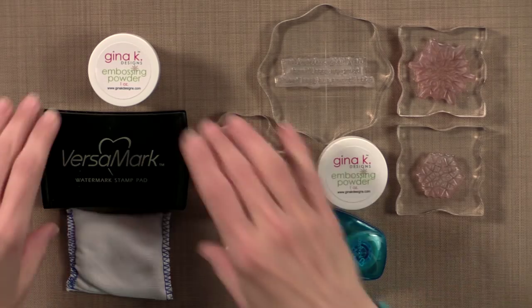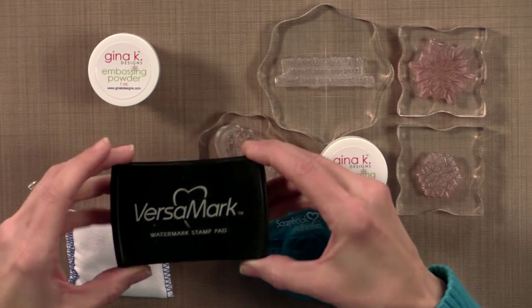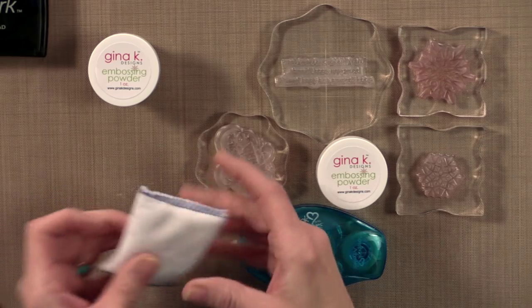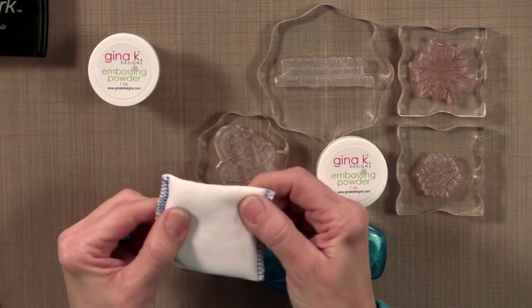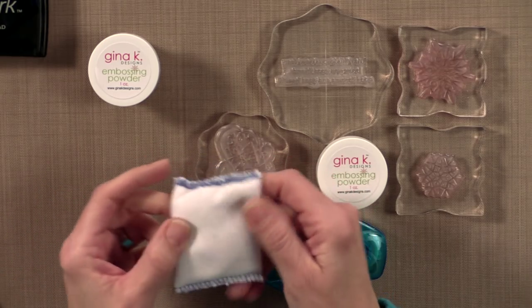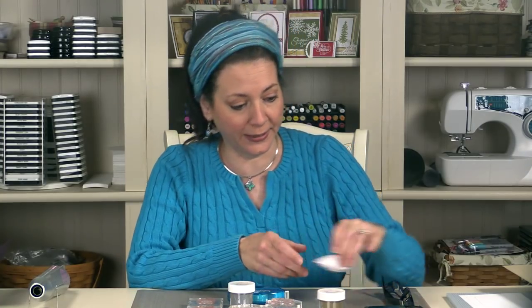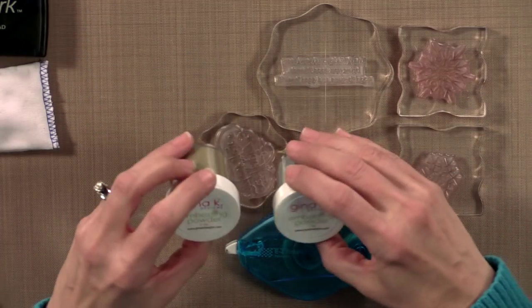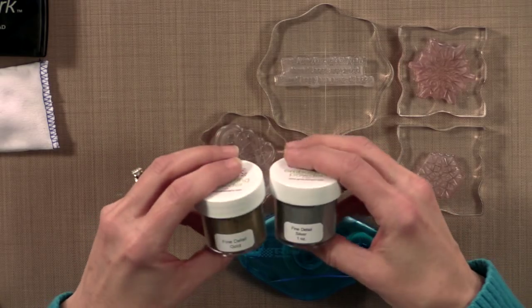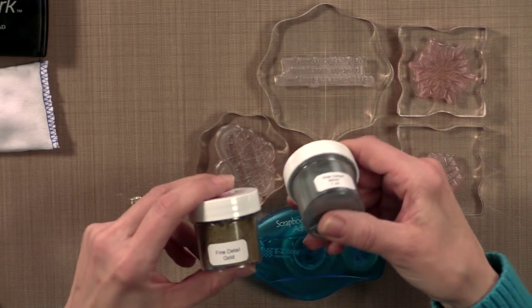First, you're going to need some ink, and the ink I'm using is the Versamark ink. You're also going to need some sort of embossing pad, and this is the embossing magic pad. This removes static from the surface of your cards and also will absorb any oils so that the embossing powder will only stick to where you want it. I have two colors of embossing powder here. I have the Gina K. Designs gold detail and silver detail.